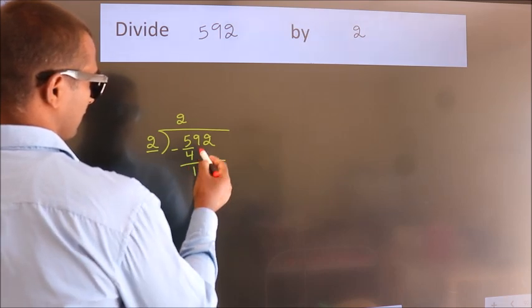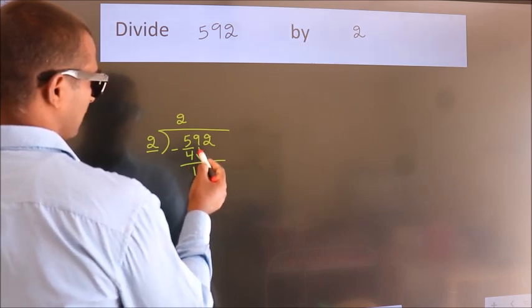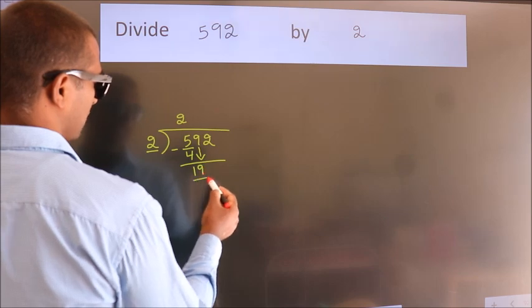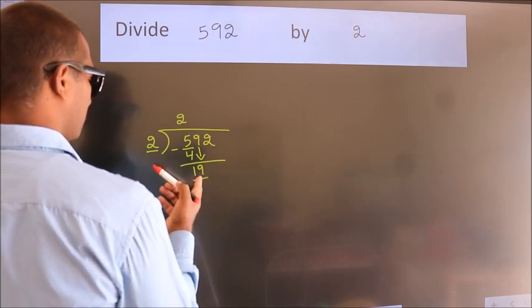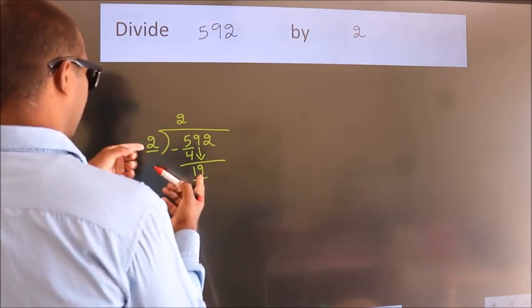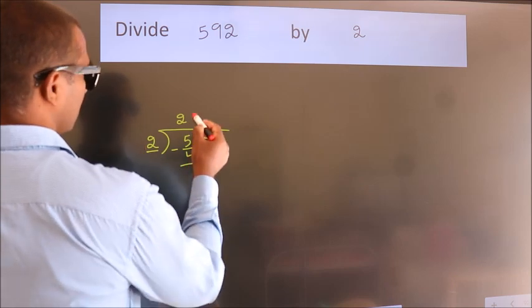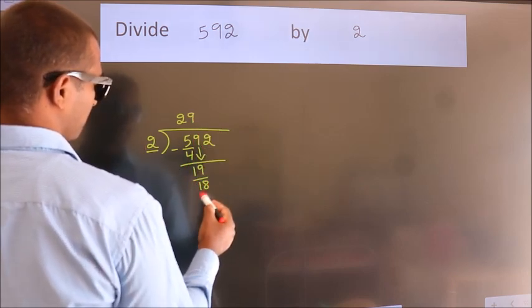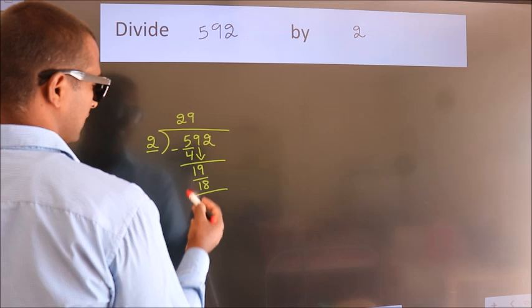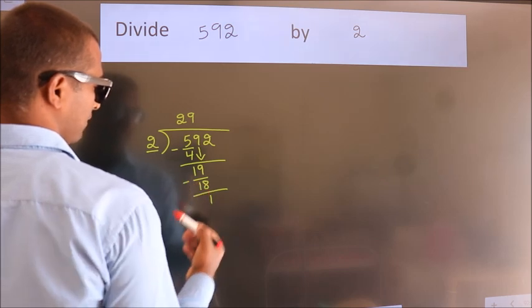After this, bring down the beside number, so 9 down, so 19. A number close to 19 in 2 table is 2 9s, 18. Now we subtract, we get 1.